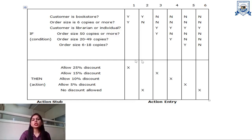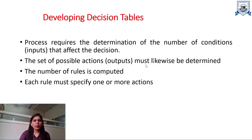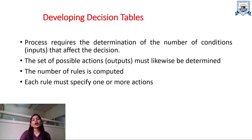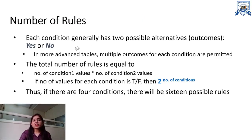Developing a decision table requires determining the number of conditions that affect the decisions. The set of applicable actions must likewise be determined, the number of rules needs to be computed, and each rule must specify one or more actions. Each condition generally has two possible alternatives — whether it is met or not — specified using yes or no.